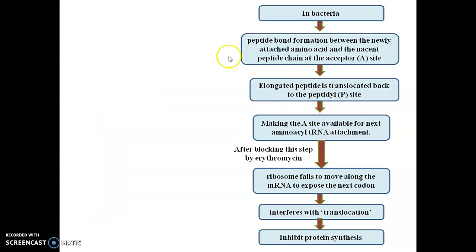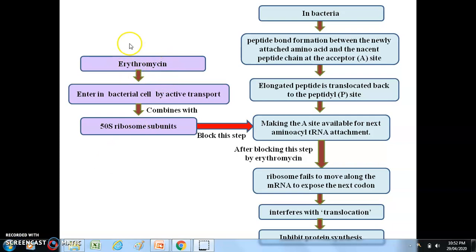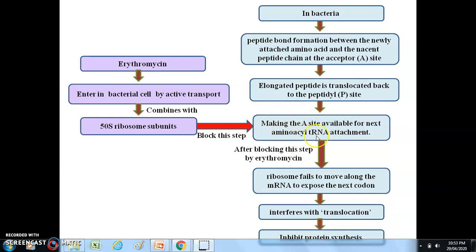Before the mechanism of action, let us understand the normal protein synthesis process in bacteria. Peptide bond formation between the newly attached amino acid and the nascent peptide chain at the receptor A site results in elongation; the peptide chain is then translocated to the P site, making the A site available for the next tRNA codon attachment. When erythromycin or any macrolide antibiotic is administered, it enters the bacterial cell by active transport, combines with the 50S ribosomal subunit, and blocks the A site from being made available for the next codon, thereby inhibiting further protein synthesis.